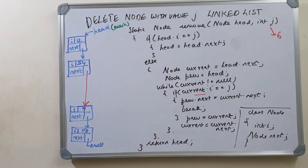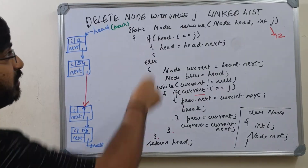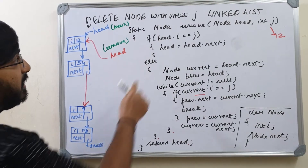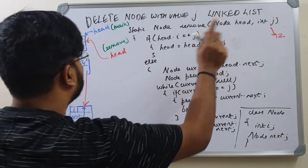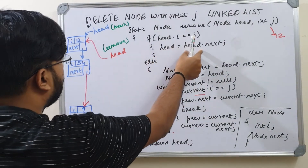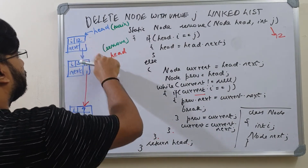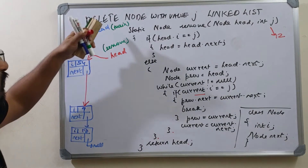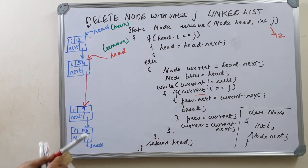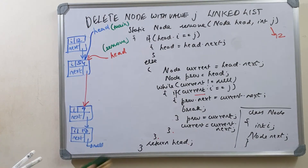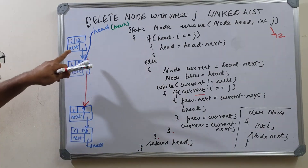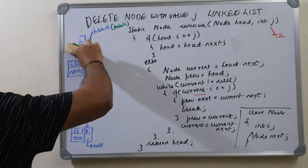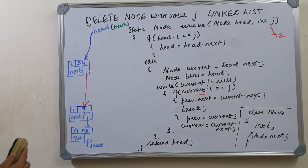Now let's see the case where we remove value 12. We enter the remove method and check if head dot i equals j — head dot i is 12 and j is 12, that's a match. We set head equals head dot next, so head now points to the node containing 54. We return head, which goes back into main. Since no variable can directly access the node with value 12, it is collected by the garbage collector, and the first node is removed.